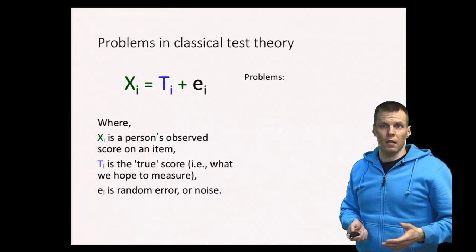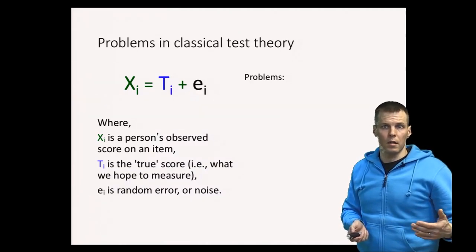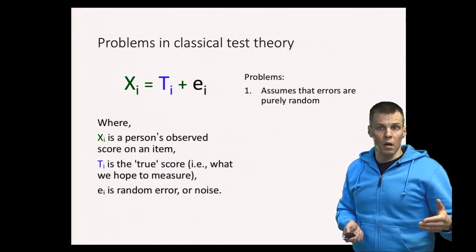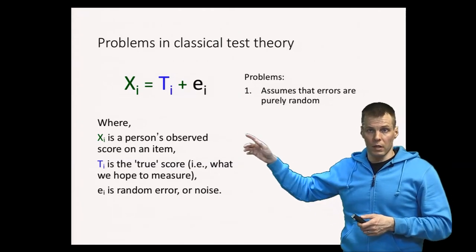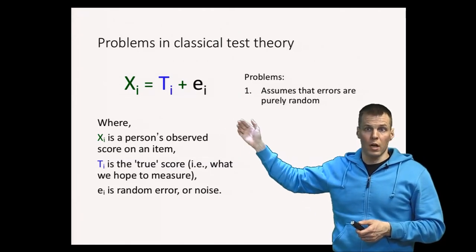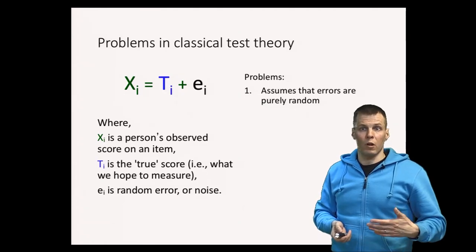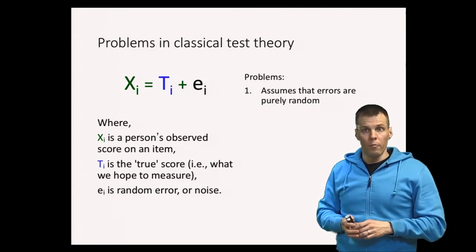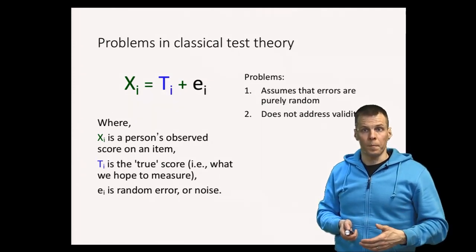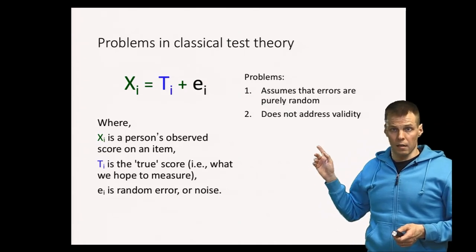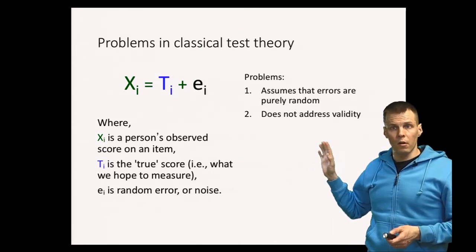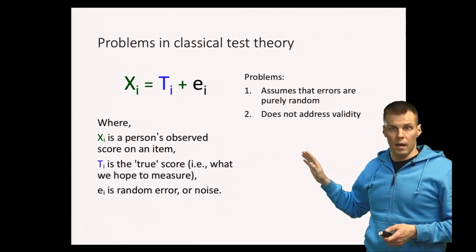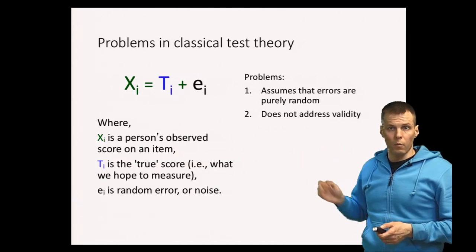There are some problems that people see with this theory. The first problem is that it assumes that errors are purely random noise. So there is no room for systematic measurement error here, and oftentimes we could have measurement error, systematic error. For example, we could have a bathroom scale that always shows 10% too much or two kilos too much. That is beyond the scope of this theory. Also, it doesn't address validity at all. But this is a useful theory because it gives us reliability, and you should not ask it more than what it provides.